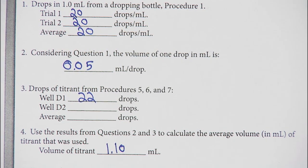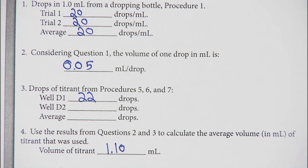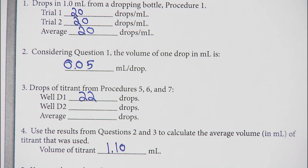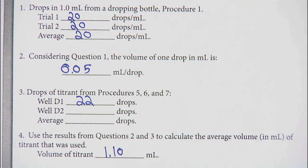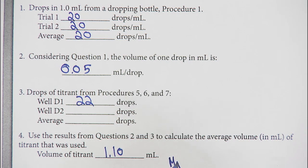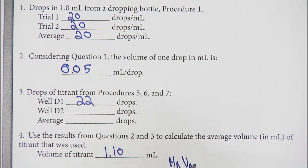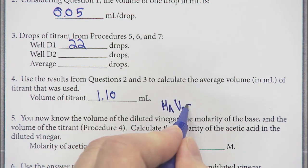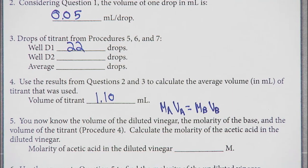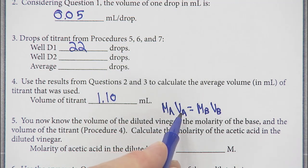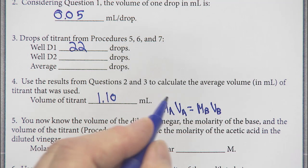Here's where we use our concentration and figure out the concentration of the acid that we don't know, because we know the concentration of the base and we know both volumes. We use our equation: the molarity of the acid times the volume of the acid equals the molarity of the base times the volume of the base. We have three of those numbers. What we do not know is the molarity of the acid.